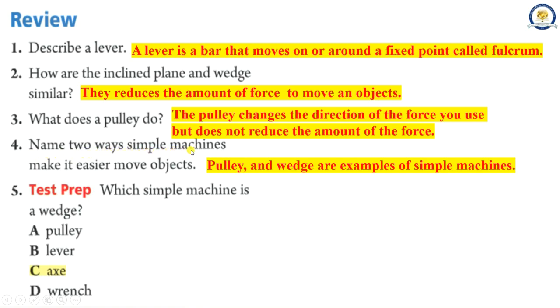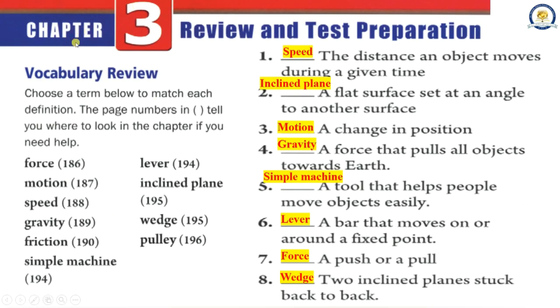4. Name two ways simple machines make it easier to move objects. Pulley and wedge are examples of simple machines. 5. Which simple machine is a wedge? A. Pulley B. Lever C. Axe D. Wrench. The correct answer is C, Axe. The page numbers tell you where to look in the chapter if you need help. Force, Motion, Speed, Gravity, Friction, Simple machine, Lever, Incline plane, Wedge, Pulley.